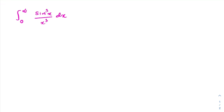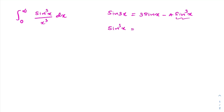In the numerator we have sin cube of x, so we use the triple angle formula: sin(3x) = 3 sin(x) − 4 sin³(x). Now I am going to isolate sin³(x), so we get sin³(x) = (3 sin(x) − sin(3x)) / 4.